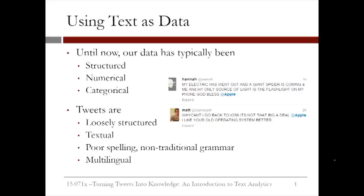Until now, we have seen data that are structured, numerical, or categorical. On the other hand, tweets are loosely structured, they are often textual, they have slurred spelling, often contain non-traditional grammar, and they are multilingual. In this example here, we see two examples of this aspect of tweets.